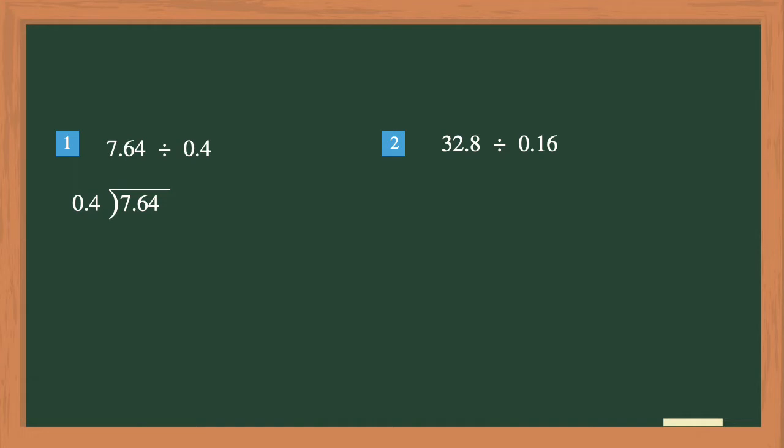The next step is to ask yourself this question: is the divisor a whole number? Looking at the divisor of 0.4, you can see that it is not a whole number. So you will need to convert it into a whole number before you can divide. Just by looking at it, you can see that if you just move the decimal point one place to the right, it will become the whole number of 4.